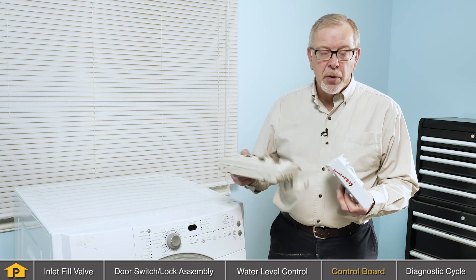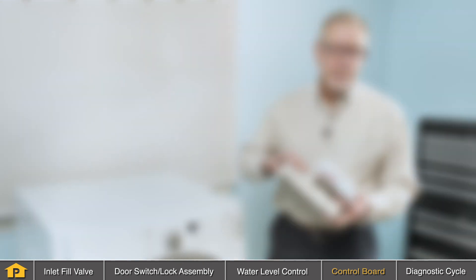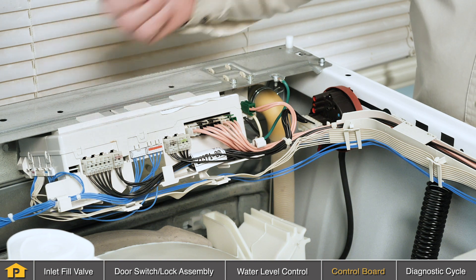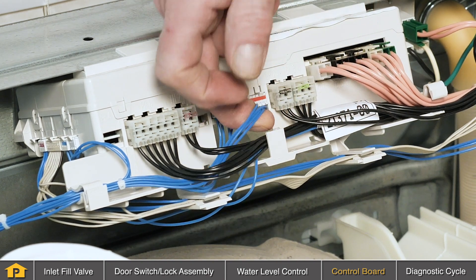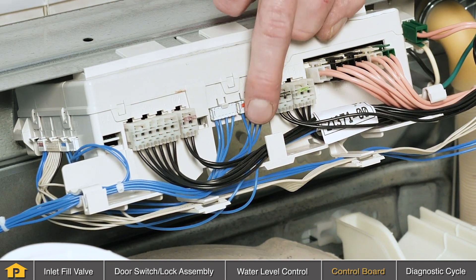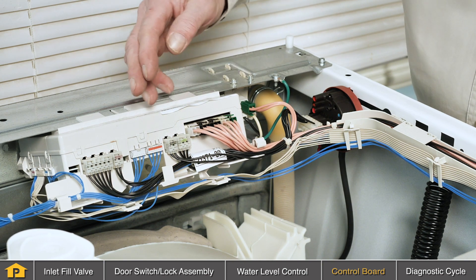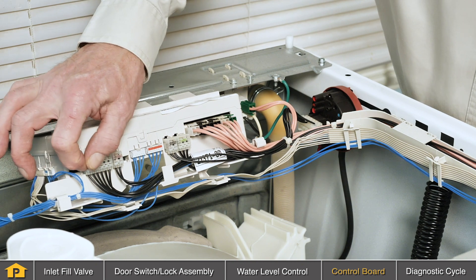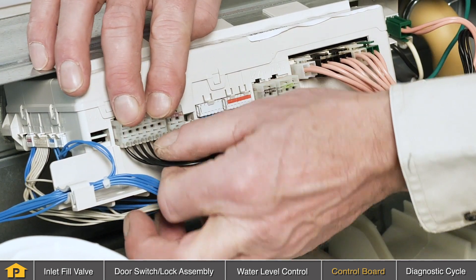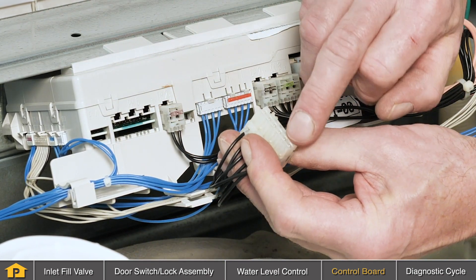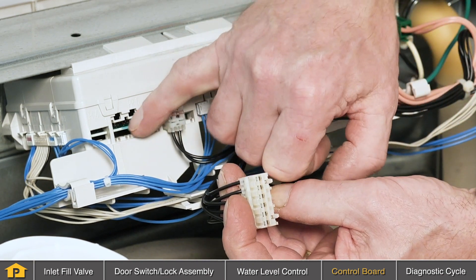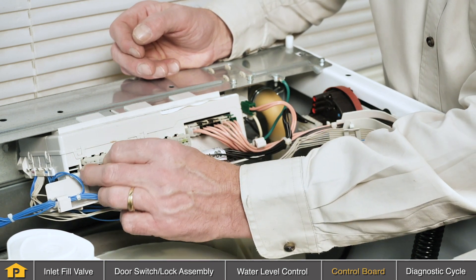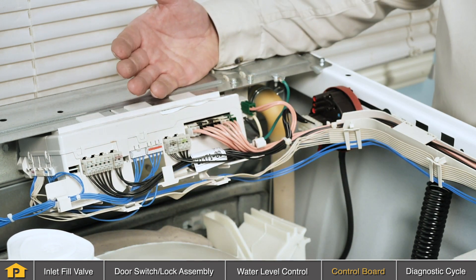Our next step will be to locate that control board and verify that the connections to the board are secure. With the control board exposed, we've looked at the wiring diagram to determine which of the connectors are associated with the fill circuit. We've identified it as this connector and verified that the connections are secure. There's also a connection from the water level control. We need to verify where that is and that the connections are secure there as well. It's a good idea to remove the actual connector itself. Look for any signs of corrosion on either the connector or the terminals at the control board. If all of those check out properly, our next step will be to run a diagnostic cycle for that washer to verify that the valve circuit is actually getting power.